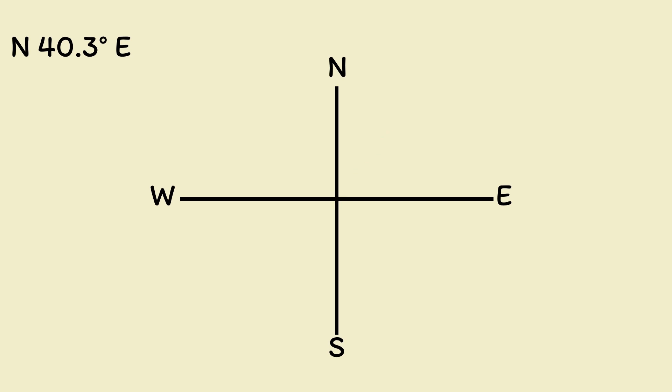Had it been north something west, it would describe this angle. So the bearing would have to be 360 degrees minus the angle. South something east would be this angle, so you do 180 degrees minus the angle, and south something west would be 180 degrees plus the angle. But you'll get used to this notation the more you practice.